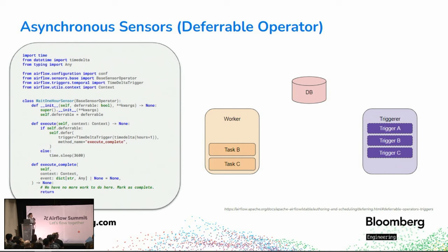There is a specific subset of sensors worth paying attention to: asynchronous sensors, also known as deferral operators. Asynchronous sensors leverage the power of asynchronous Python programming to execute looped IO-bound callbacks within a single Python process known as the triggerer. If written well, a single triggerer process can handle thousands of these callbacks to check conditions, meaning you incur very little overhead on the Airflow cluster.